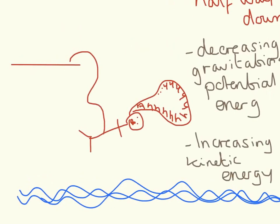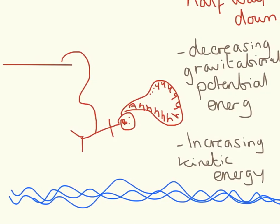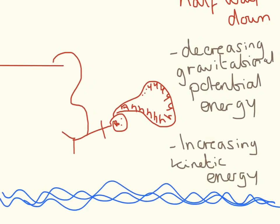When we're halfway down, the amount of gravitational potential energy we have is decreasing and the amount of kinetic energy we have is increasing.